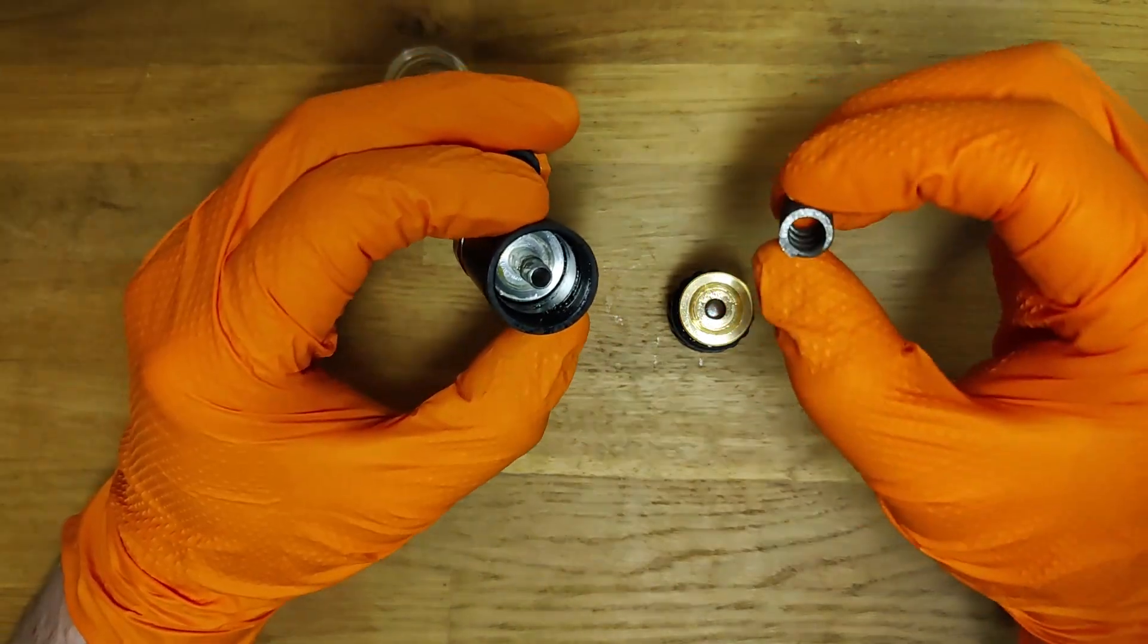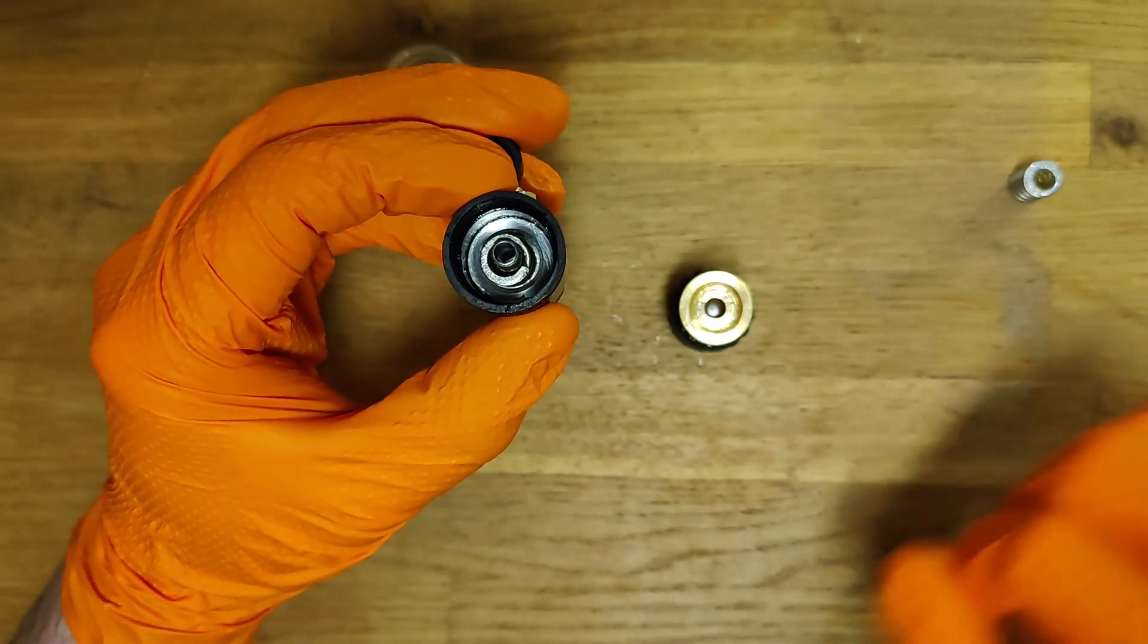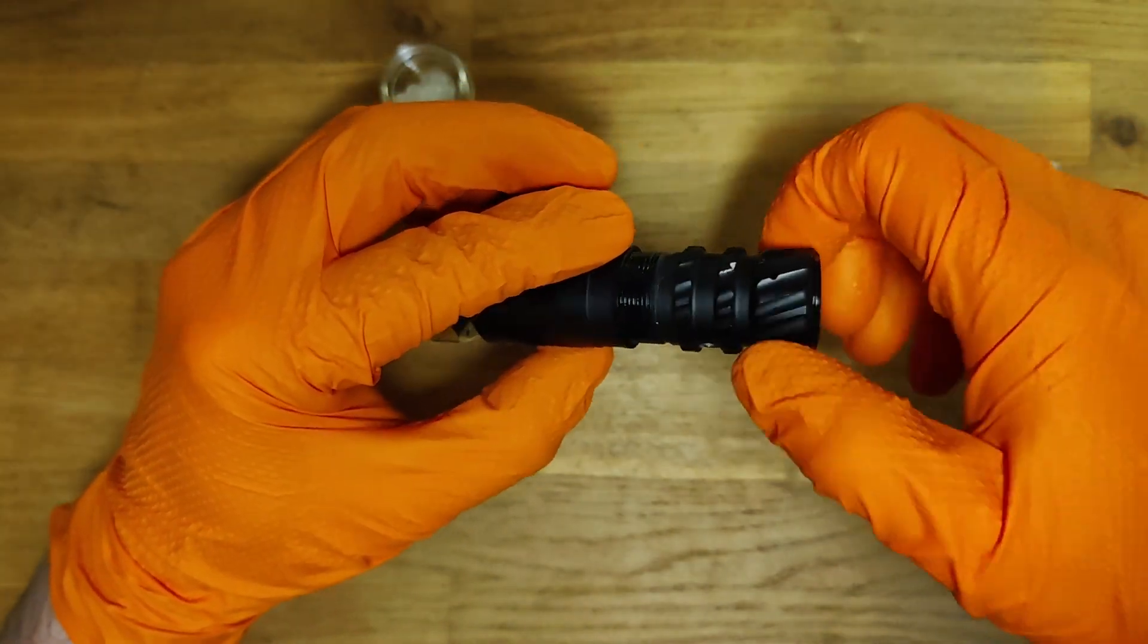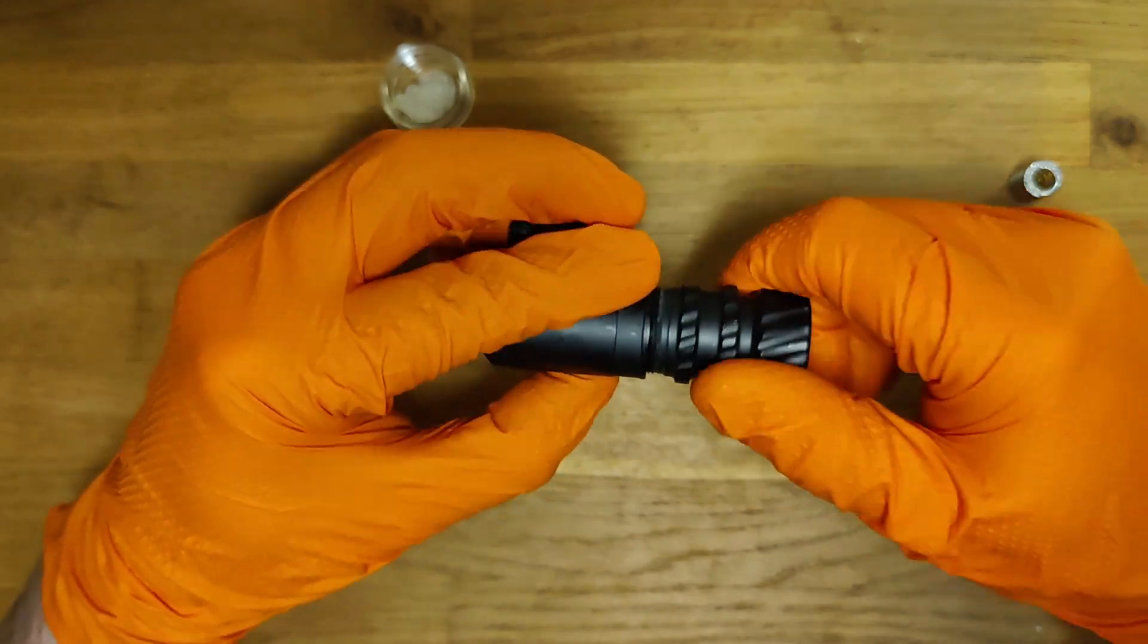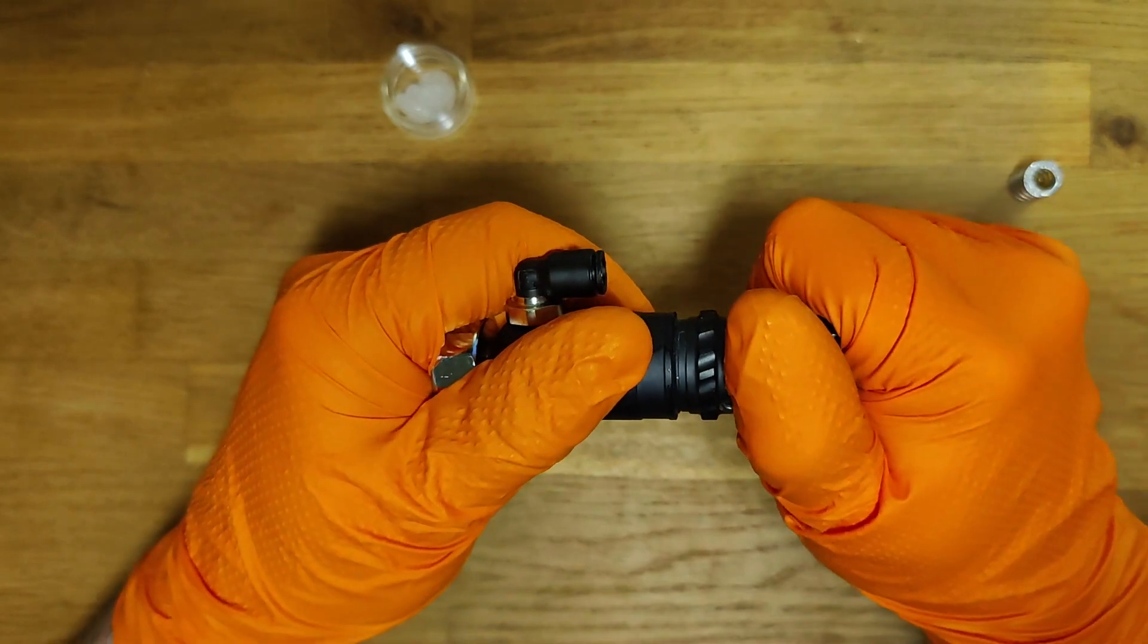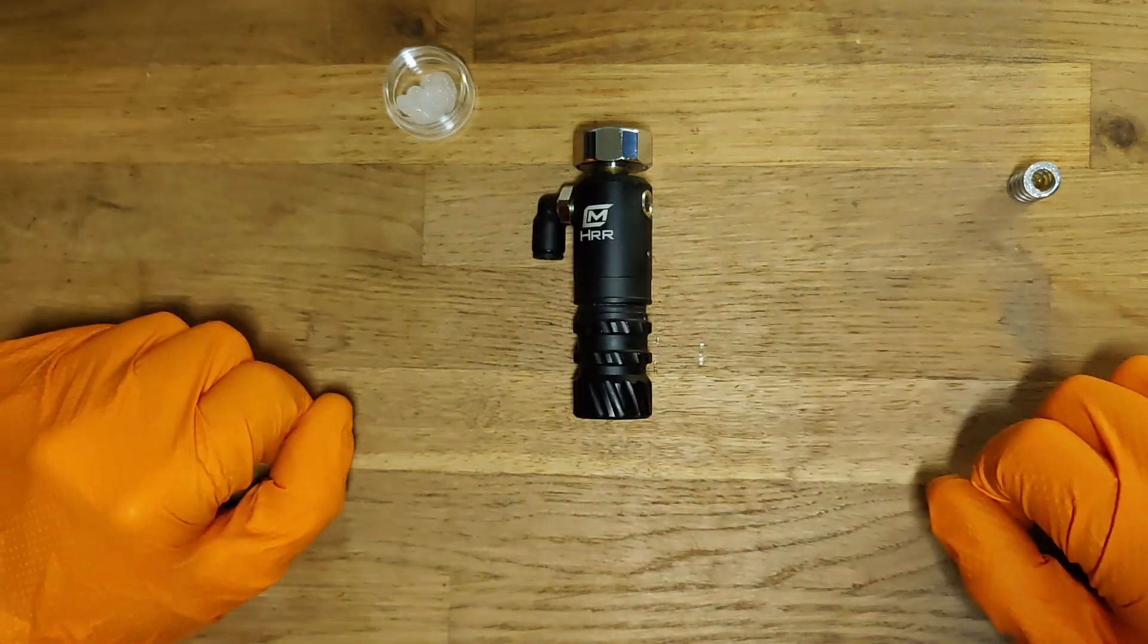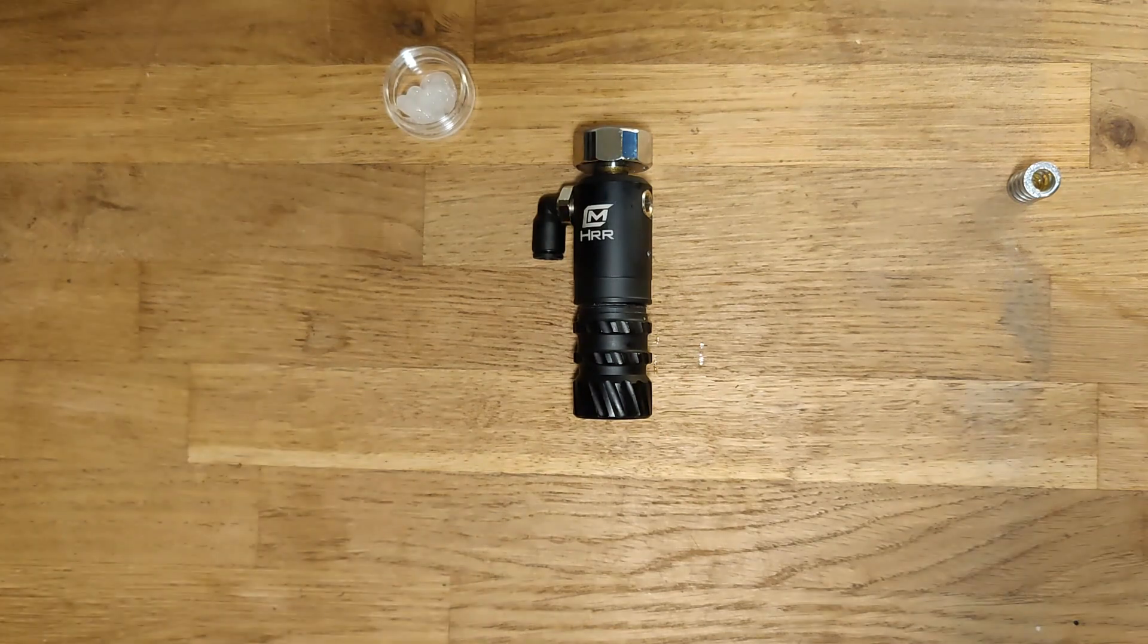Now take the spring you desire to put in and simply put it on. Now we can put the bottom section of the regulator and screw it in. Make sure it's nice and secure, and you're ready. Thank you.